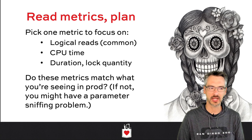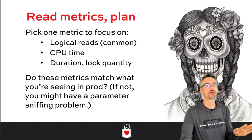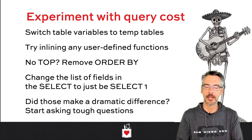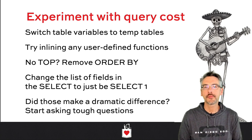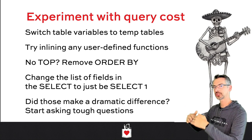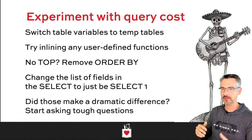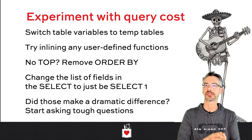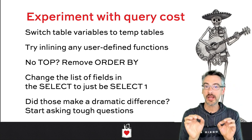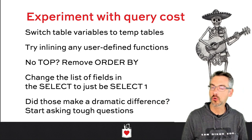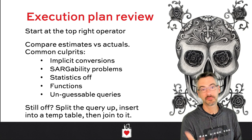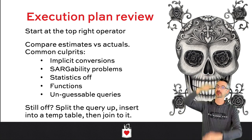There are also rarer cases where I tune to reduce blocking or locking. Once I've read the query metrics and have a rough idea of what I'm looking at, I start Experimenting with the query cost. The more you work with SQL Server, the more you recognize common anti-patterns — a table variable being a bad idea, sorting six million rows in SQL Server when you could push that to the application tier, or a user-defined function you might be able to rewrite and inline.